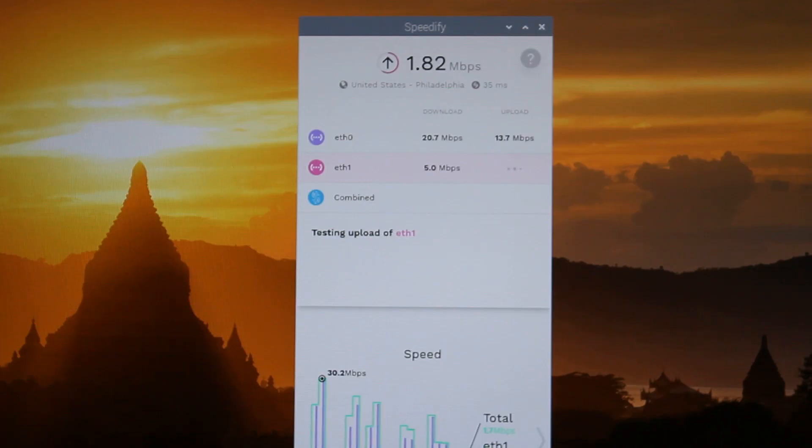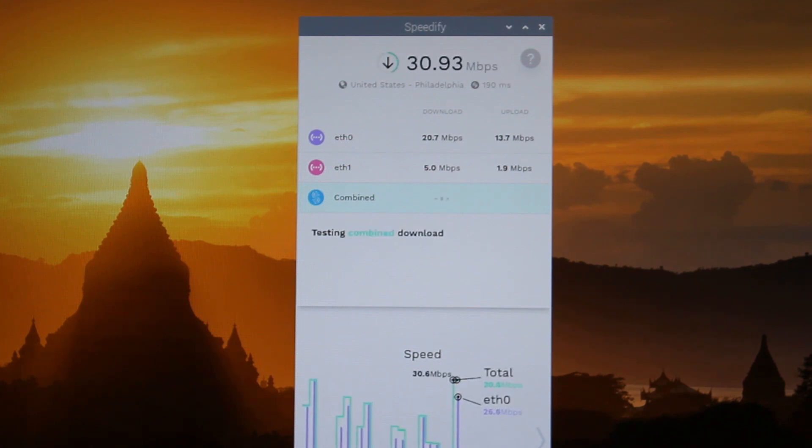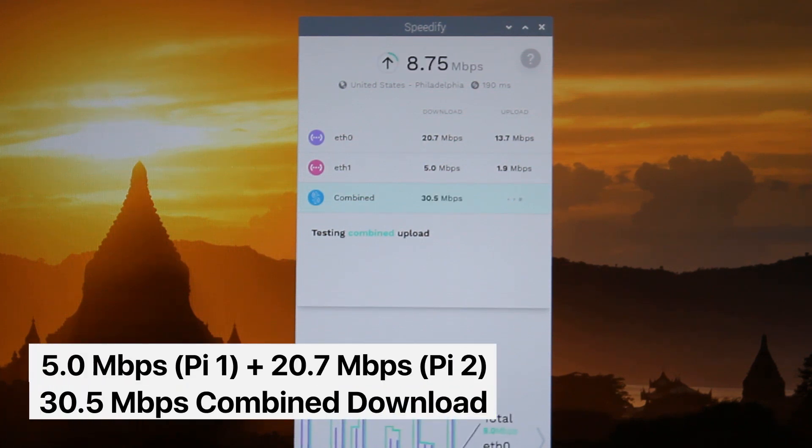The second tethered phone was our strongest individual connection, providing 14 megabits of download speeds on its own. After combining both Pi's together, our total eight connection downloads clocked in at over 30 megabits per second.